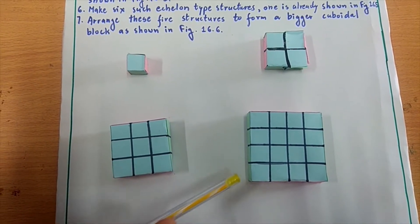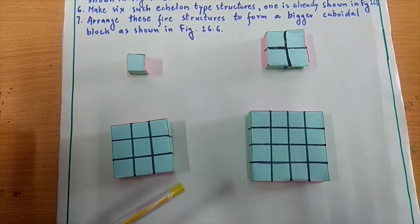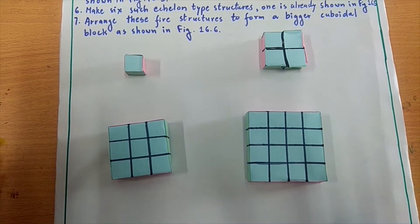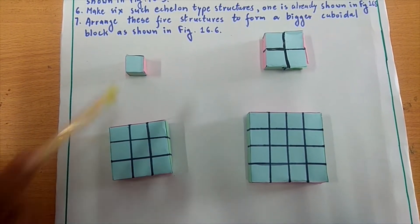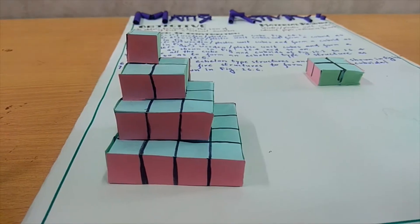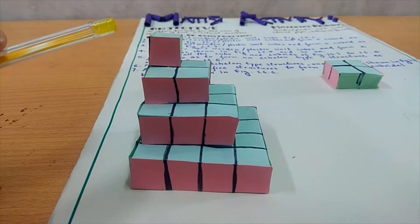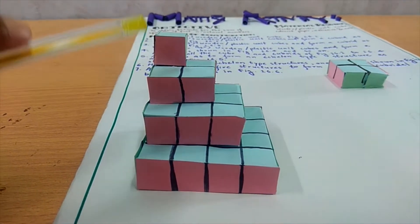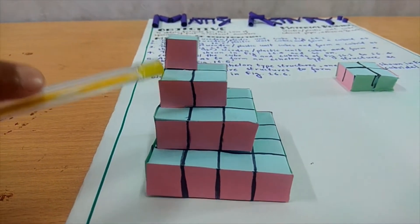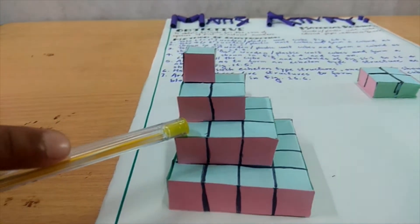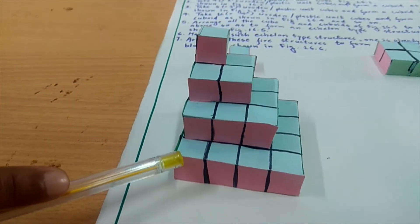These are the cubes of 1, 2, 3 and 4. And these are the cubes of 1 squared, 2 squared, 3 squared and 4 squared.